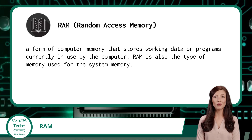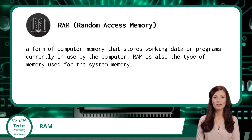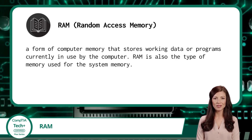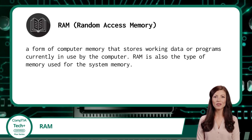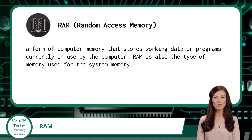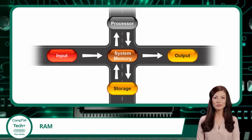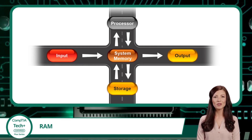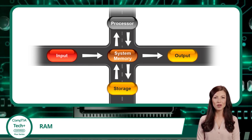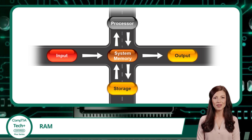Once a software program is started, its instructions are loaded into the system memory and remain there until no longer needed by the computing device or until the computing device is powered off. System memory is different from long-term storage devices such as hard drives because it provides much faster access to data.